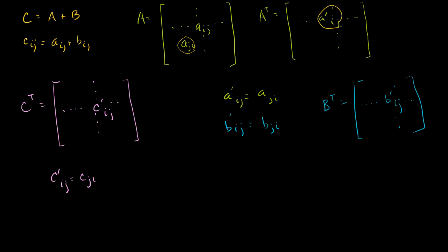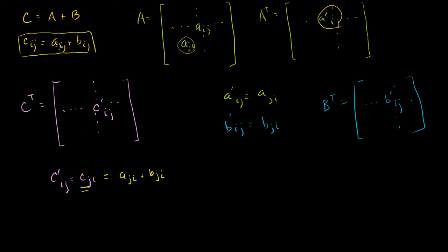Now what is Cji equal to? We know that Cij is equal to A sub ij plus B sub ij. So if you swap the indices around, Cji is going to be equal to A sub ji plus B sub ji. If I had an x and a y in one place, I'd have an x and a y in the other — I have a j and an i here, so I have a j and an i there.